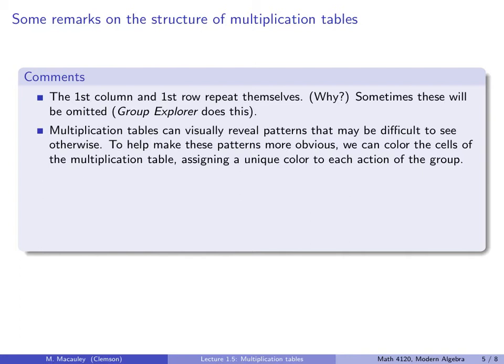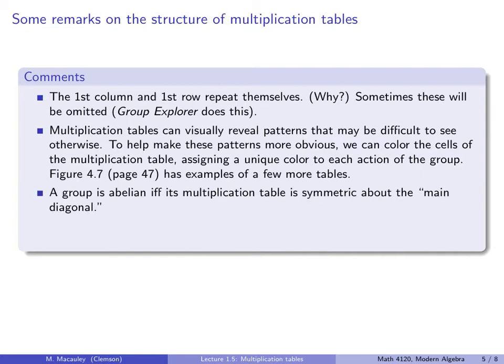In that program you can enter, there's a big library of small groups and you can see their Cayley diagrams. You can change the generating sets and see how that changes, and they show the multiplication tables. In that program they omit the first column and the first row. Multiplication tables can visually reveal patterns that may not be difficult to see otherwise. To help make these patterns more obvious, we often color the cells of the multiplication table, assigning a unique color to each action of the group. Not necessary, but it doesn't hurt.